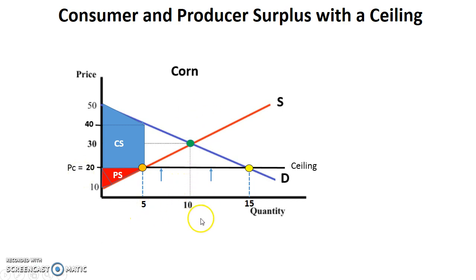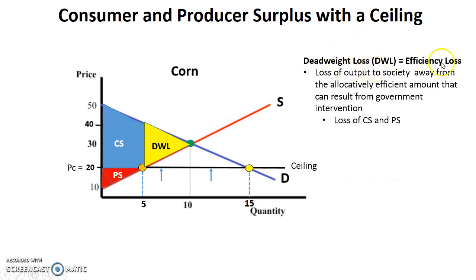We're not at our allocatively efficient point of 10, and anytime we're not at the allocatively efficient point we need to figure out the deadweight loss — also known as the efficiency loss. It's the loss of output to society when you're not at the allocatively efficient amount, usually resulting from government intervention. It's also the loss of consumer and producer surplus. At the allocatively efficient point the full consumer and producer surplus triangles existed, but because of this price ceiling the quantity is smaller, and that remaining area is the deadweight loss.